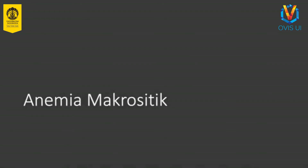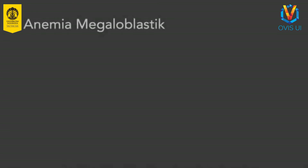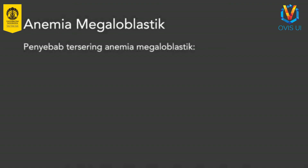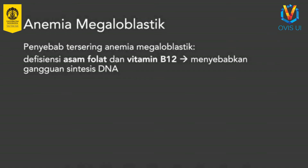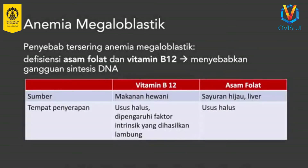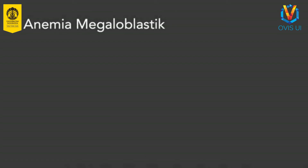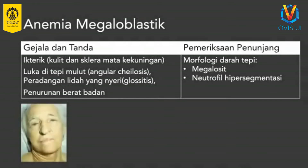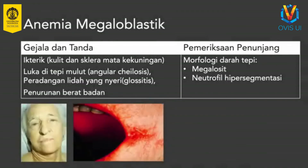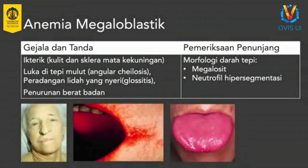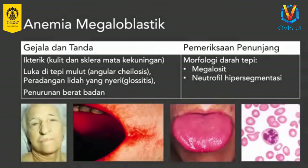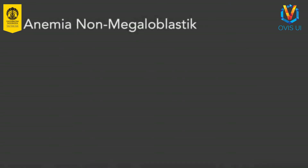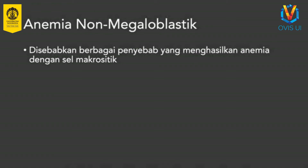Diagnosis anemia makrositik. Anemia makrositik dapat dibedakan menjadi anemia megaloblastik dan non-megaloblastik. Penyebab tersering anemia megaloblastik adalah defisiensi asam folat dan vitamin B12. Kedua zat tersebut berperan dalam sintesis DNA pada proses eritropoiesis. Anemia megaloblastik akibat defisiensi asam folat dan vitamin B12 selain menyebabkan gejala umum anemia, dapat pula disertai gejala lain seperti kulit dan sklera mata kekuningan atau ikterik, luka di tepi mulut atau angular keilosis, dan peradangan lidah atau glossitis. Pemeriksaan morfologi darah tepi menunjukkan sel darah makrositik disertai megalosit, dan neutrofil hipersegmentasi juga dapat ditemukan.